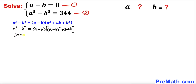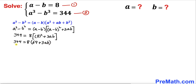Therefore we substitute these values: 344 equals 8 times the quantity 8 squared plus 3ab. Simplifying further: 344 equals 8 times 64 plus 3ab. Now let's divide both sides by 8, giving us 43 equals 64 plus 3ab.